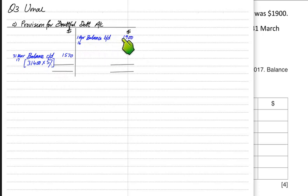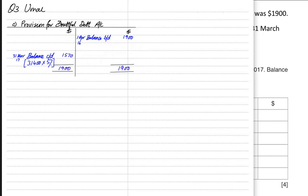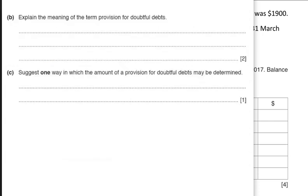If the provision was increased, then the provision needs to be created. If the provision is decreasing, it would be debited and transferred to the income statement. Whichever the shorter side is, it needs to be transferred to the income statement. This balance carried down becomes balance brought down at the start of the next period.